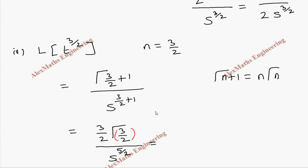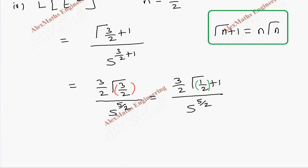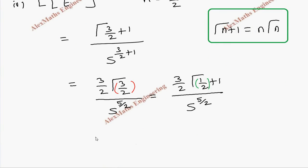We split gamma of 3 by 2 as gamma of 1 by 2 plus 1, since 1 by 2 plus 1 equals 3 by 2, to apply the formula again. With n equal to half, applying the formula once more we get 3 by 2 times 1 by 2 times gamma of half, all over s to the power 5 by 2.